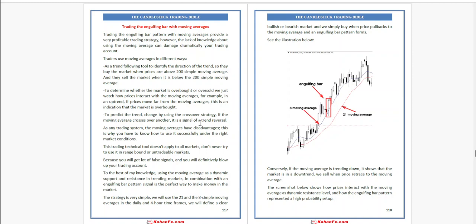As a trend-following tool to identify the direction of the trend, traders buy the market when prices are above the 200 simple moving average and sell the market when it is below the 200 simple moving average. To determine whether the market is overbought or oversold, we watch how prices interact with the moving averages.